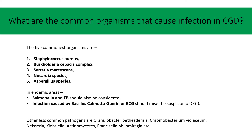The five commonest pathogens causing infection in patients with CGD are Staphylococcus aureus, Burkholderia cepacia, Serratia marcescens, Nocardia, and Aspergillus. In endemic areas, Salmonella and tuberculosis should be considered as well. Infection caused by BCG should raise a suspicion of CGD. There are also reports of infection caused by many other pathogens such as Granulobacter bethesdensis and Chromobacterium violaceum.